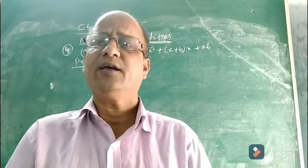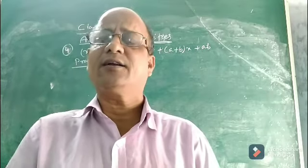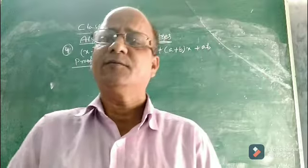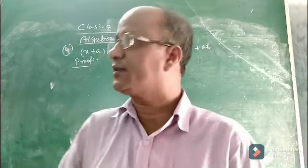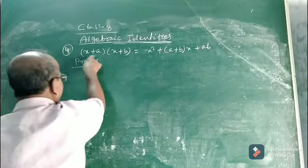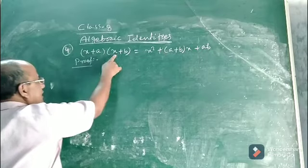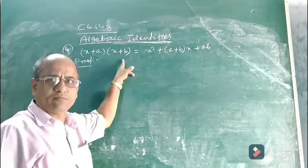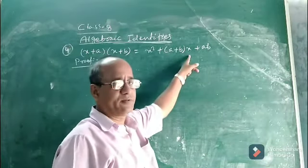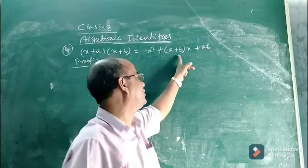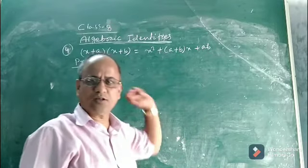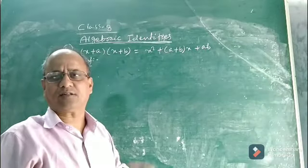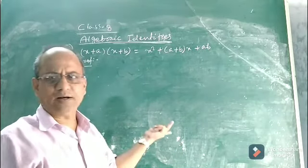After the third identity, let us see what the fourth algebraic identity is. The fourth algebraic identity is the product of two binomials. Look at x plus a — this is one binomial; x plus b is another binomial. The product will be x square plus a plus b into x plus a into b. We will discuss its application when we solve problems.